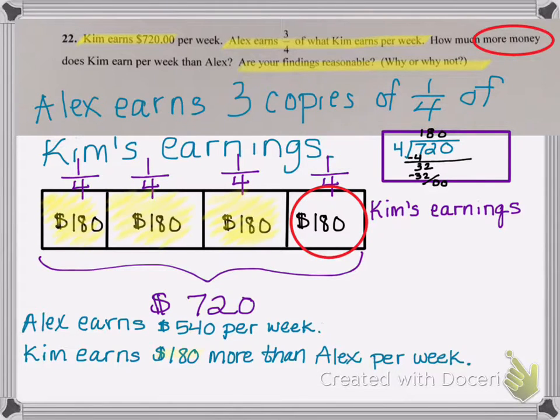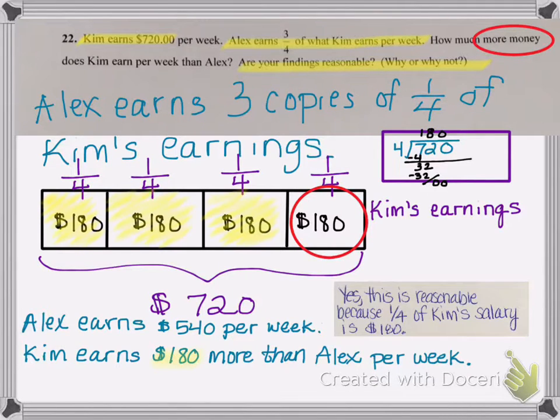Now, we need to also explain why our findings are reasonable. And we will say, yes, this is reasonable because one-fourth of Kim's salary is $180. Alex only earned three-fourths of her salary, so that extra one-fourth is what Kim earns, and one-fourth of her salary, as we can see from the diagram here, one-fourth of her salary is $180.